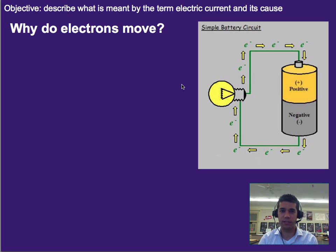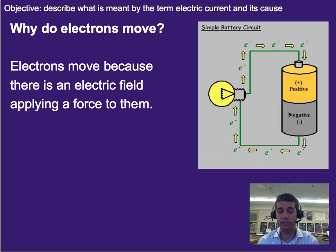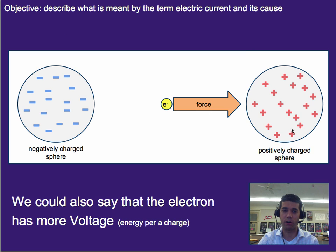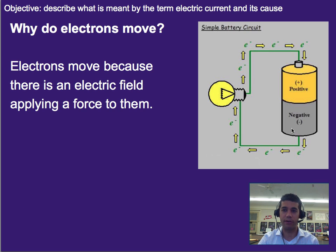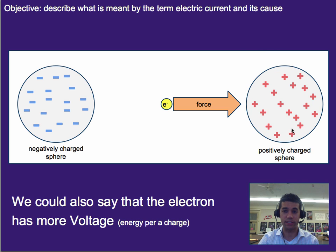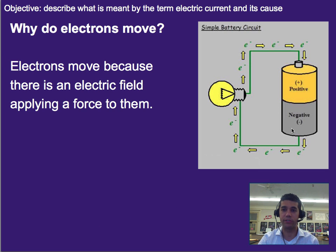And so that brings us to this idea of why do electrons move. Well, batteries work by having a build-up of charge, either positive or negative, on either side. So essentially electrons are being pushed by the electric field through a wire. So electrons are moving because there's an electric field applying a force to them. In this case, the negative side of the battery acts like our negative sphere here, and the positive side of the battery acts like our positive sphere here. And so we drive the electrons through the circuit based on that force that's being applied.